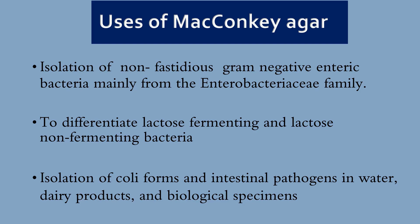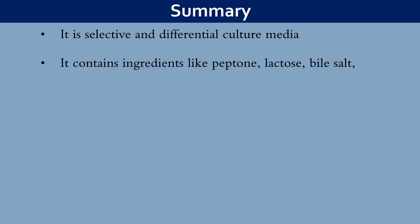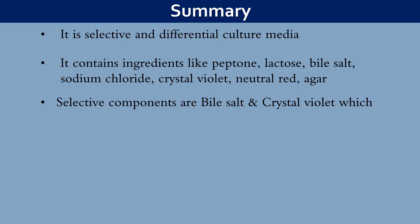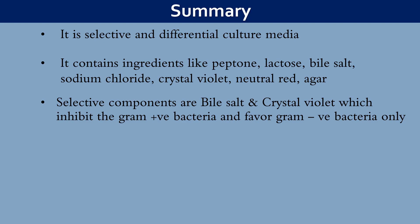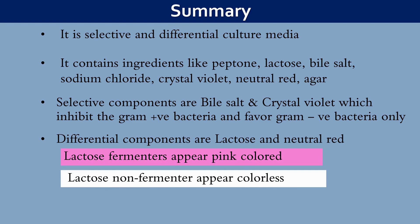Let us summarize what we learned about McConkie's Agar. It is a selective and differential culture media containing peptone, lactose, bile salt, sodium chloride, crystal violet, neutral red, and agar. The selective components — bile salt and crystal violet — inhibit the growth of gram-positive bacteria and favor only gram-negative bacteria. The differential components — lactose and neutral red — allow lactose-fermenter colonies to appear pink, while lactose non-fermenter colonies appear colorless. It is used for the detection of coliform and enteric pathogens.